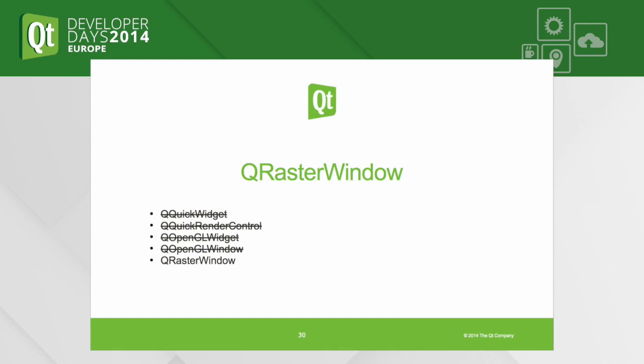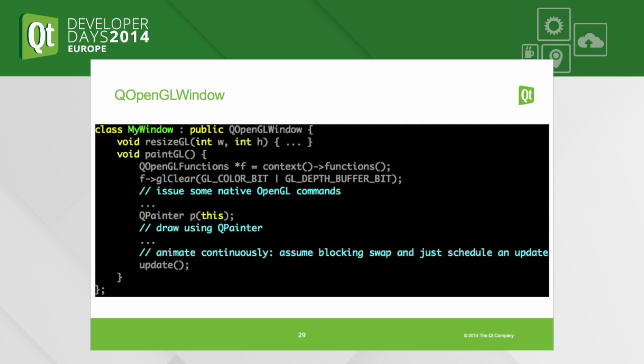QOpenGLWindow has some extra features — you can have an extra framebuffer. This is inspired by QOpenGLWidget, which is backed by a framebuffer object, so whenever paintGL is called, the previous content is preserved. You can do this also with QOpenGLWindow if you want, but it's optional. By default it's like a real native window using a window surface, which is still probably the fastest way.